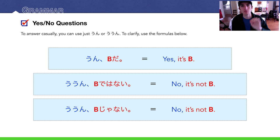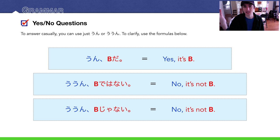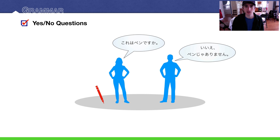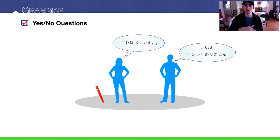Going back to the formulas: うん、Bです — 'Yeah, it's B.' ううん、BじゃないorBではない — 'No, it's not B.' In context: she asks それはペンですか？ and he confirms. Then she asks again — he says いいえ、ペンじゃありません, or he corrects her: いいえ、えんぴつです.